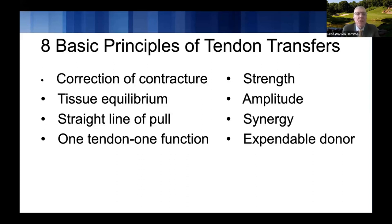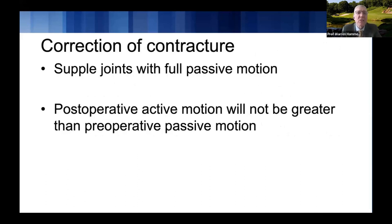When you think about correction of contracture, you need supple joints with full passive motion, starting right at the time an injury is identified. It's much easier to maintain passive motion than to regain it after a contracture has occurred. We know that postoperative active motion will never be greater than preoperative passive motion. You want to passively mobilize the joints — whether you're doing a flexor tendon graft, tenolysis, or a tendon transfer — to maximize your chance of success.